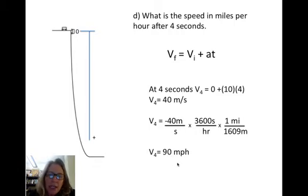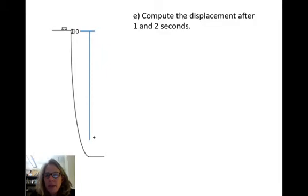The next problem then asked us to compute the displacement after one and two seconds, and we also have to do it after three and four seconds because we need to graph it for problem F. So I'm using this equation where the final displacement is equal to the initial displacement plus the initial velocity times time plus one half the acceleration times time squared. In this case, we start at zero, so our initial velocity is going to be zero.